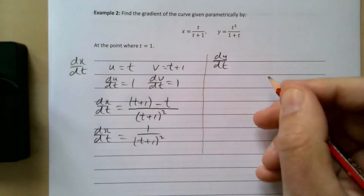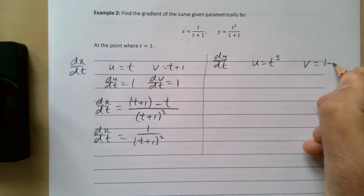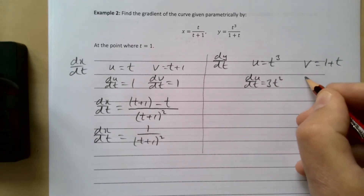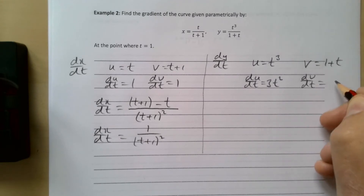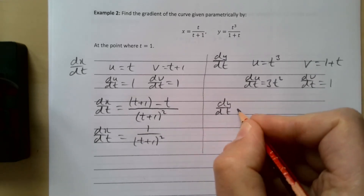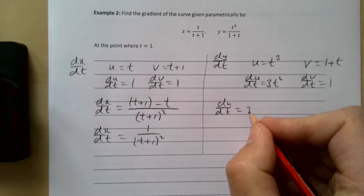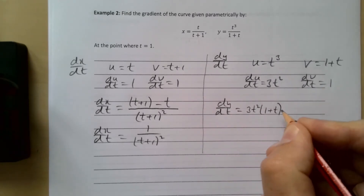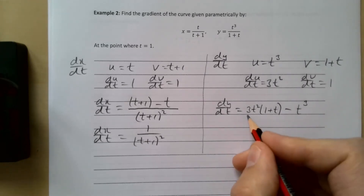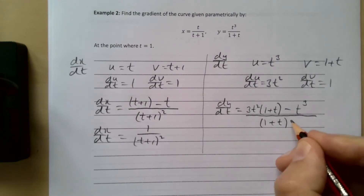Now for dy/dt, again using the quotient rule with u equals t cubed and v equals one plus t. du/dt is 3t squared and dv/dt is one. So dy/dt equals v·du/dt minus u·dv/dt all over v squared: that's 3t²(1+t) minus t³, all over (1+t)².